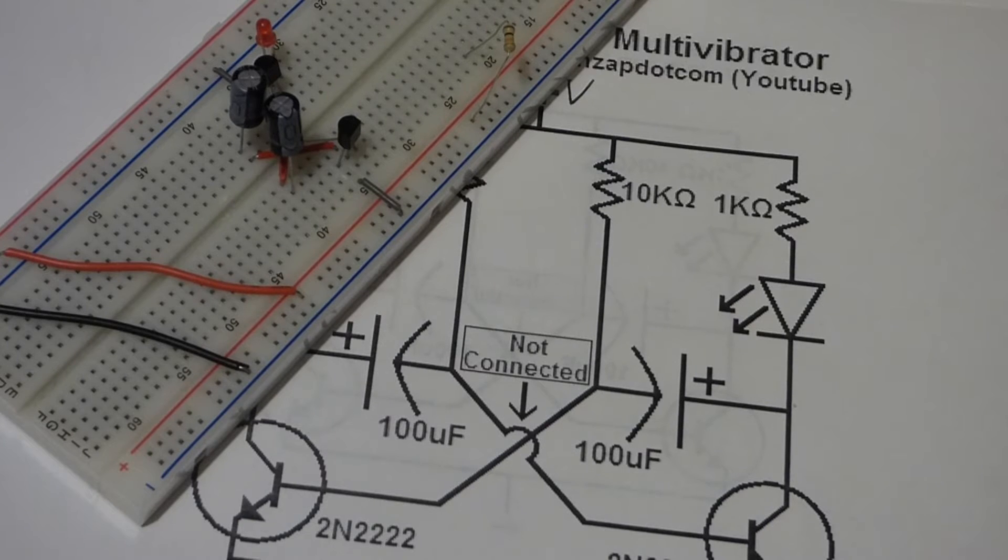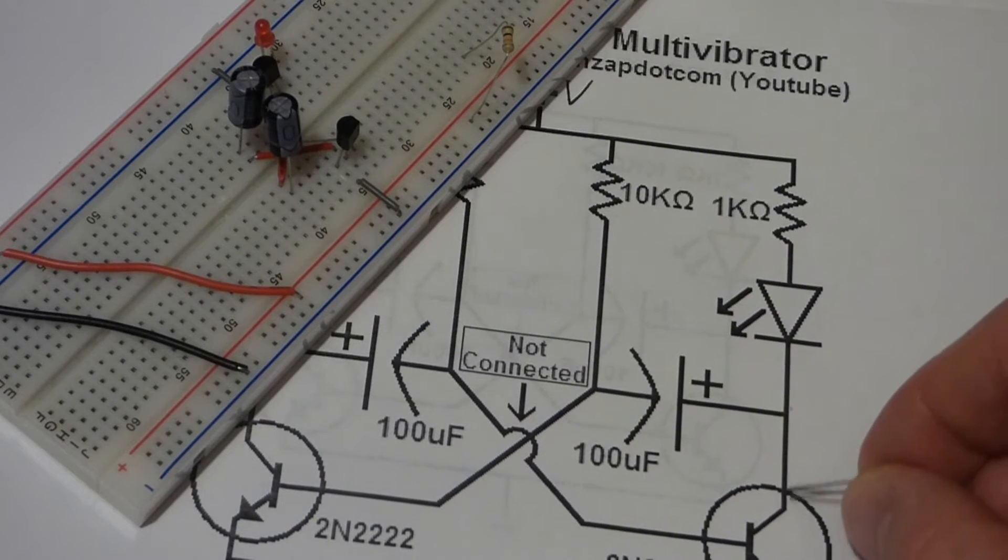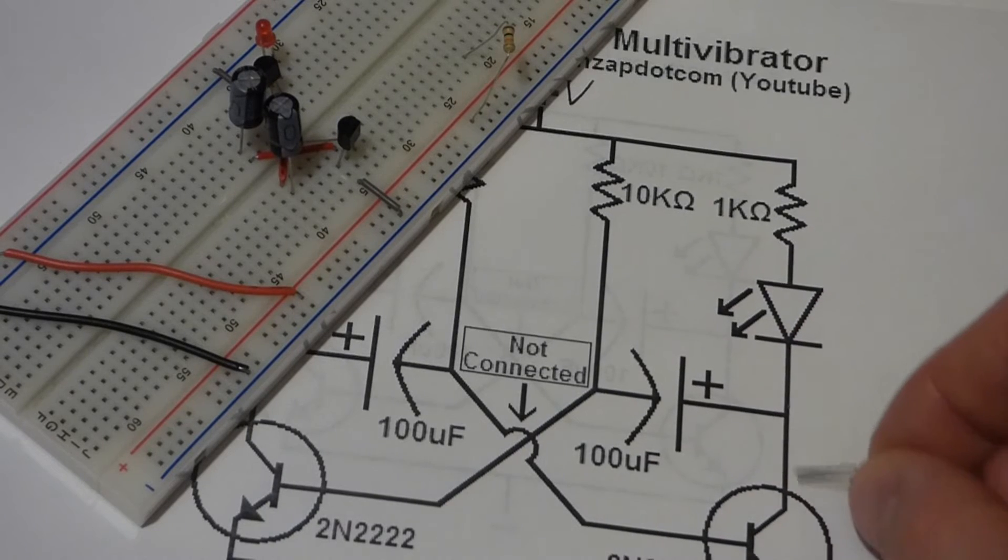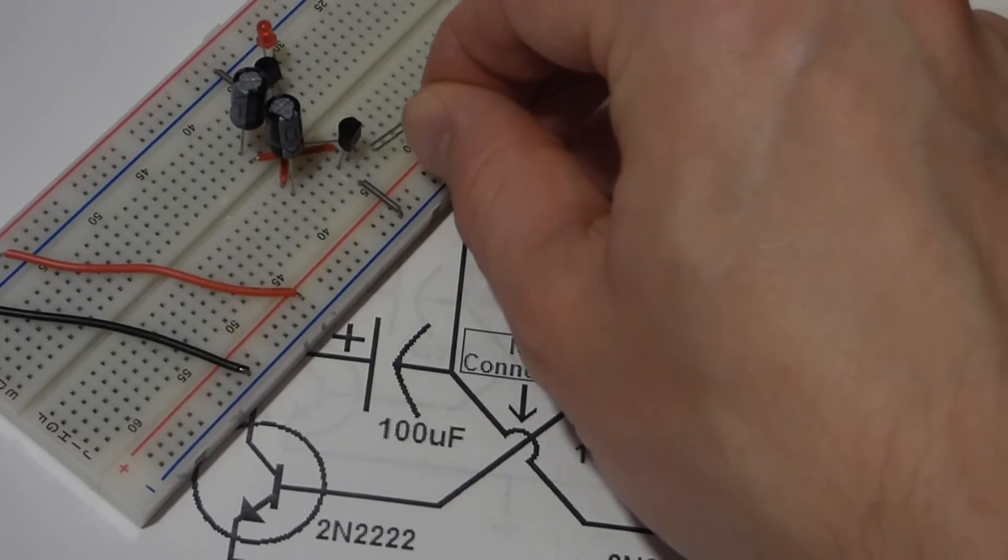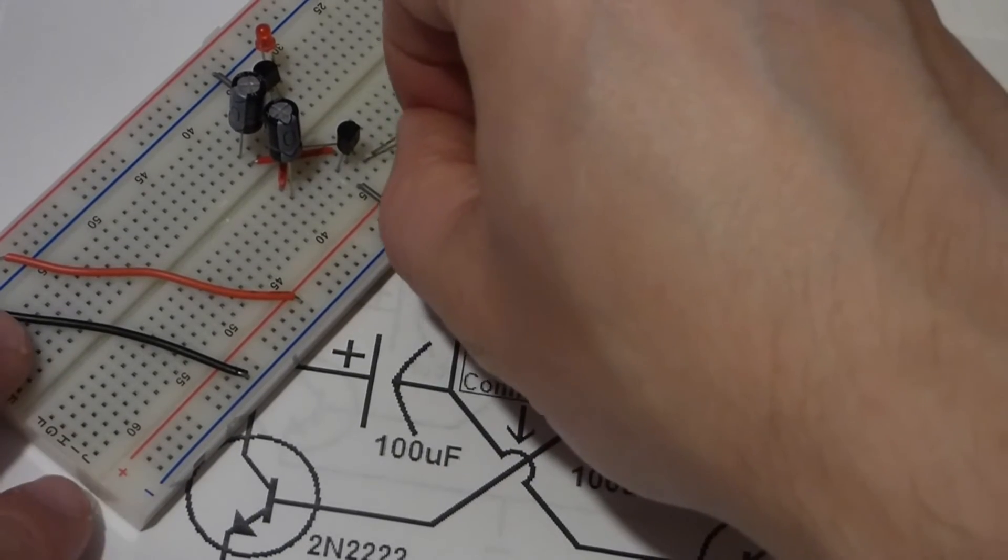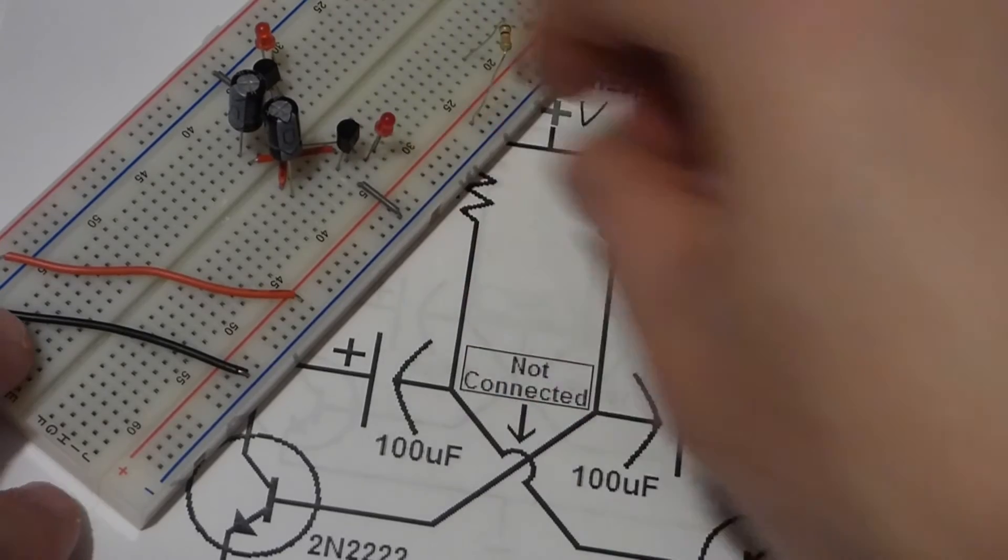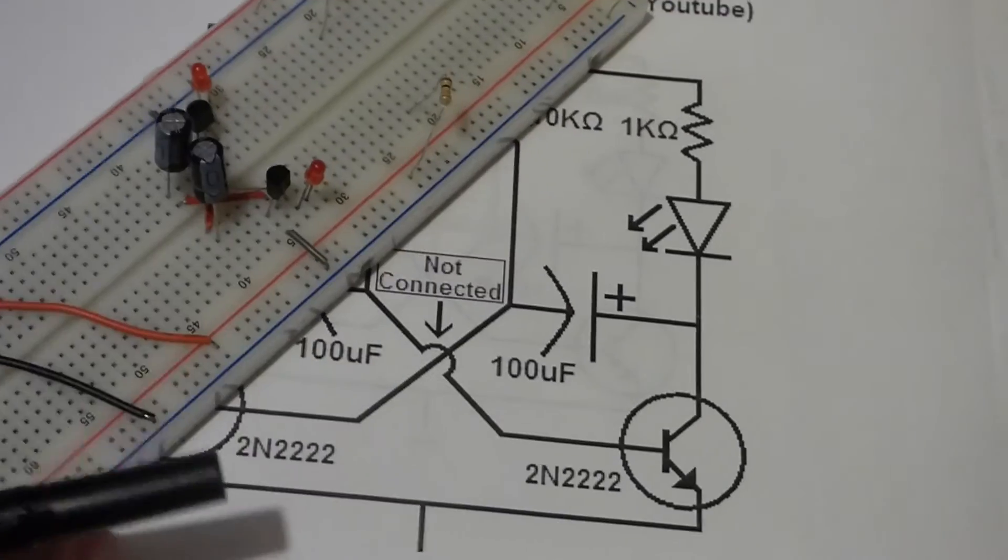So now, we come to the LED. The LED also connects to the collector, as did the positive side of the resistor. So this one's really easy. We just put the long lead above the collector and the short lead into the row that the transistor collector is on.